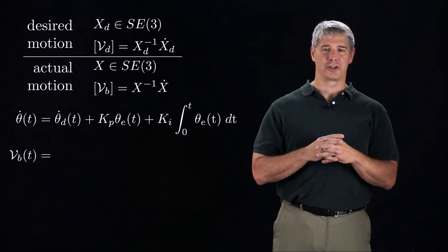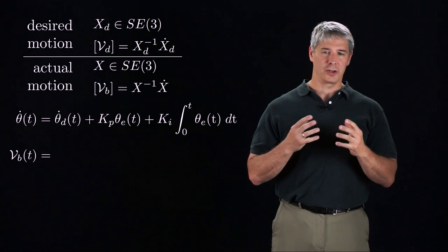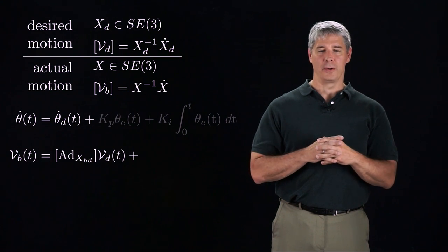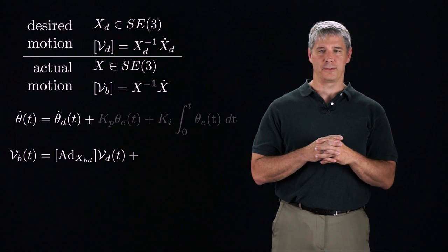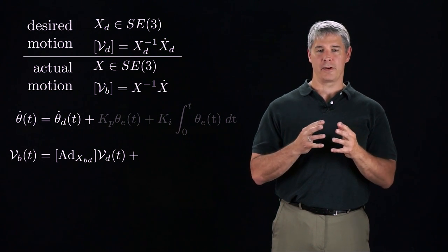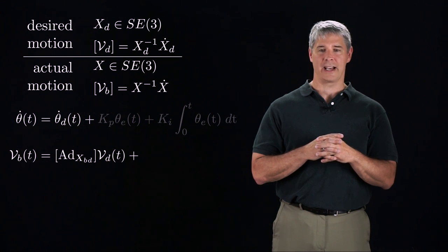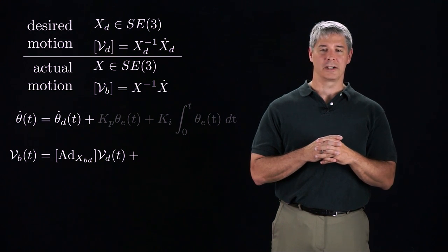Now we can write a task space version of our feedforward plus PI feedback controller. The controller commands the actual end effector twist Vb. The feedforward component is the desired twist Vd but expressed in the actual end effector frame. To change the frame of reference of the twist, we use the matrix adjoint of the transformation matrix Xbd that expresses the desired configuration relative to the actual configuration.